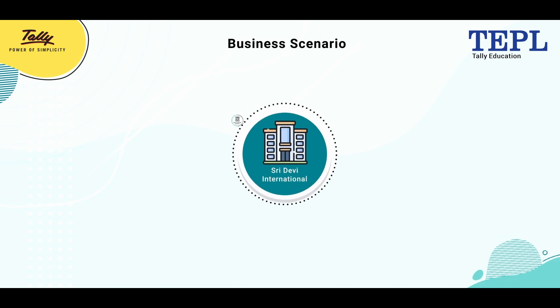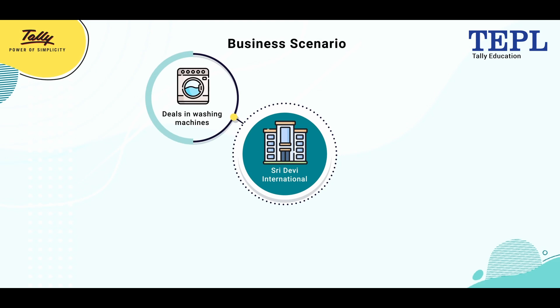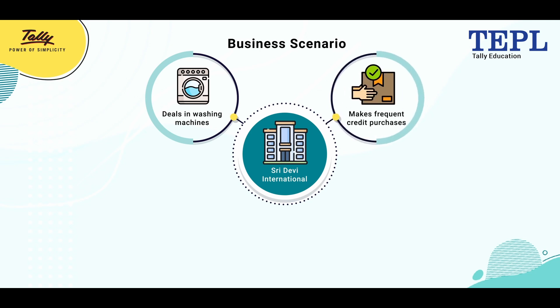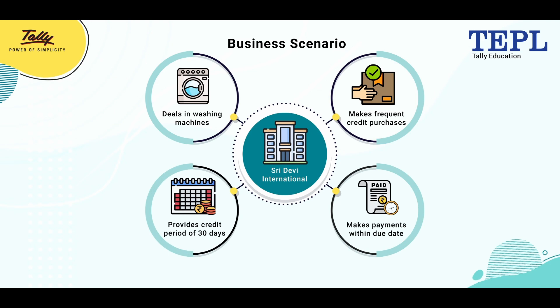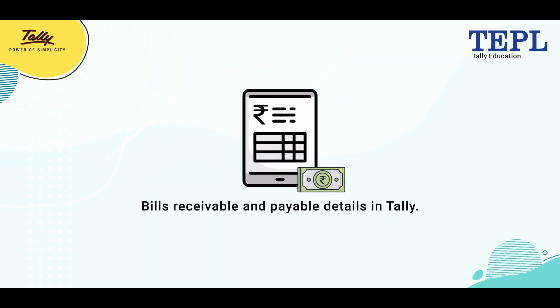Now we will look at a business scenario for better understanding. Sridevi International deals in different types of washing machines from different brands like LG and Samsung. The company makes frequent credit purchases and ensures all payments are made within the due date. It makes sales on a credit basis to different dealers with a credit period of 30 days. The company wants to track its bills receivables and payables details in Tally.